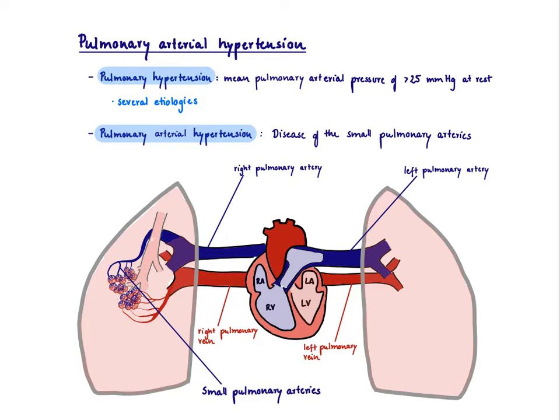However, in this video, we're going to focus on a very specific subcategory of pulmonary hypertension: pulmonary arterial hypertension. This was also previously known as primary pulmonary hypertension. It is a disease of the small pulmonary arteries — the small blood vessels right here.